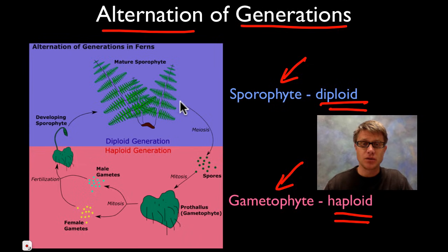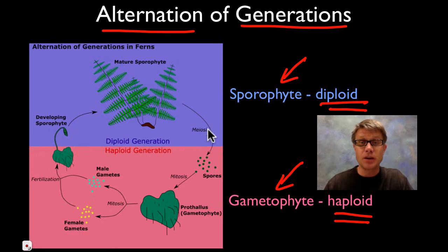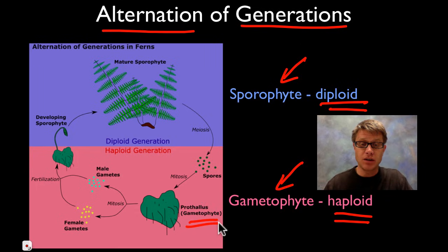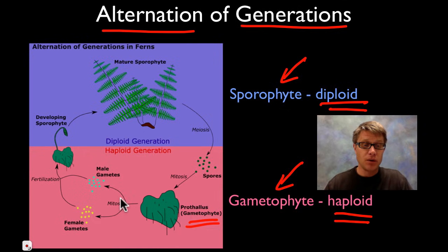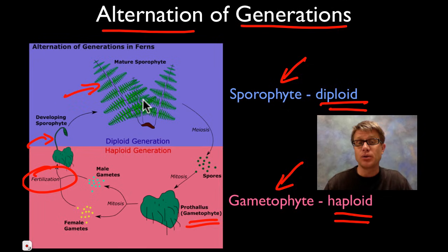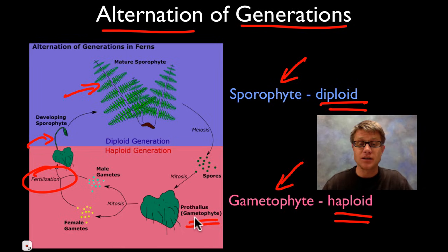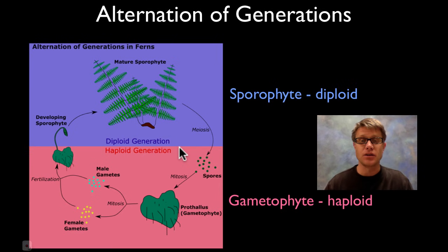Let's look at how this plays out in ferns. Meiosis creates spores — this introduces variability and reduces chromosome number to N, or haploid. Then mitotic growth of those spores creates the gametophyte portion, which is a really small structure below what you might think of as the fern. Fertilization then creates the sporophyte, the diploid portion, and the cycle repeats. In mosses, most of what you see is gametophyte; but as you move up to something like a conifer tree, what you're mostly looking at — just as in humans — is the sporophyte or diploid portion.